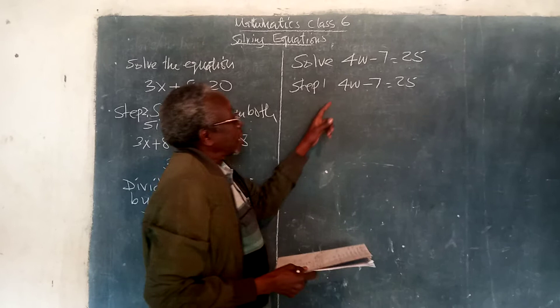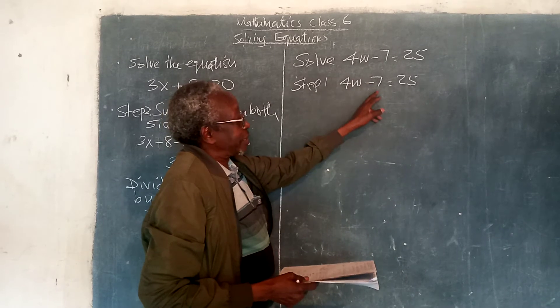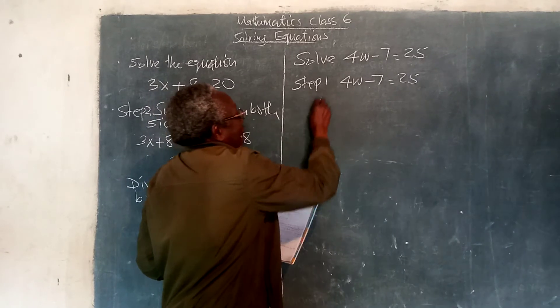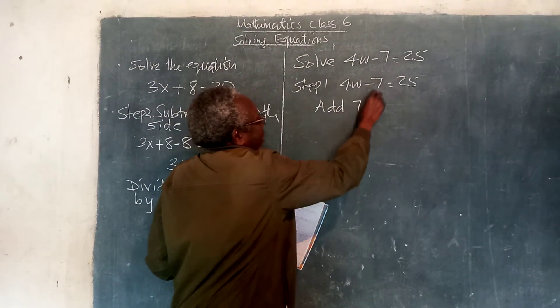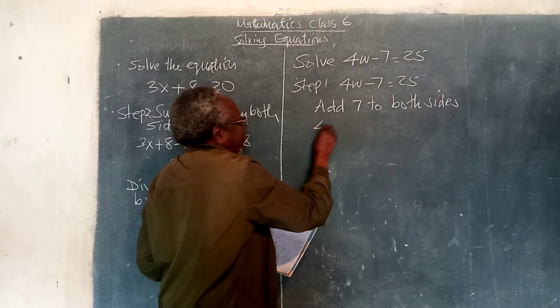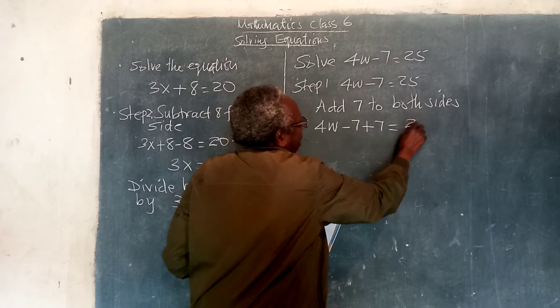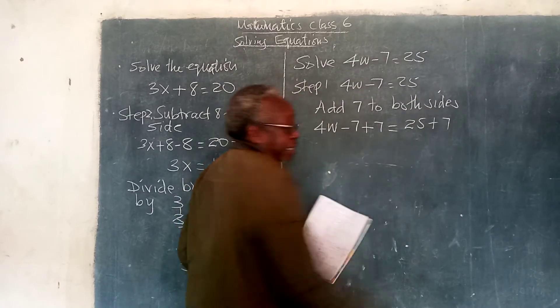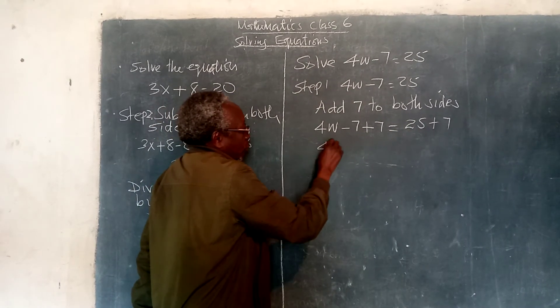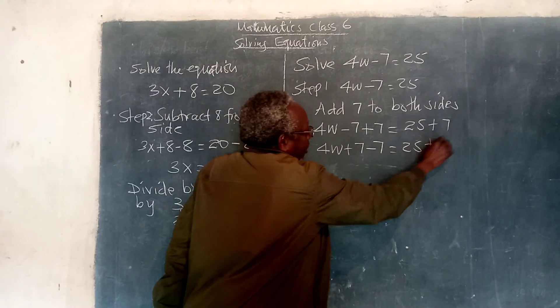It means that when you take away 7 from 4w or 4w less 7, the answer is 25. So, in this case, the first step is add 7 to both sides. And so, you have 4w take away 7, we add 7 to this side on the left side, and then we have 25 plus 7. So, now, we have added 7 to both sides. Another way of writing this one, you can also write 4w plus 7, take away 7 is equal to 25 plus 7.